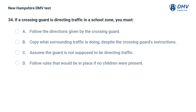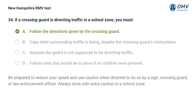If a crossing guard is directing traffic in a school zone, you must: A) follow the directions given by the crossing guard, B) copy what surrounding traffic is doing despite the crossing guard's instructions, C) assume the guard is not supposed to be directing traffic, D) follow rules that would be in place if no children were present. The answer is A. Be prepared to reduce your speed and use caution when directed by a sign, crossing guard, or law enforcement officer. Always drive with extra caution in a school zone.